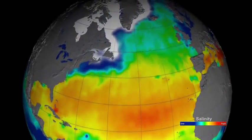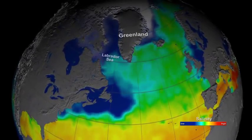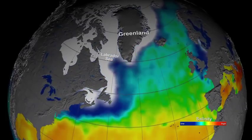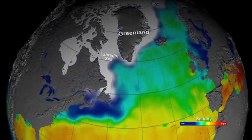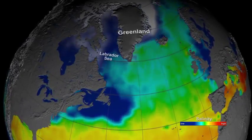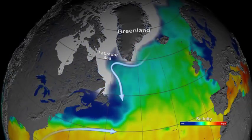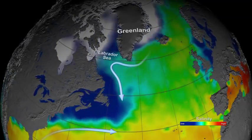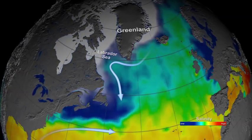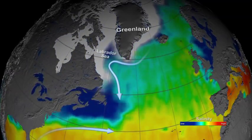At high latitudes, the seasonal melting of sea ice causes a sharp decrease in sea surface salinity. We see examples of this in the Labrador Sea and the coastal waters that surround Greenland. In spring and summer, surface currents transport the low salinity water south, where it meets warmer and saltier water carried north by the Gulf Stream.